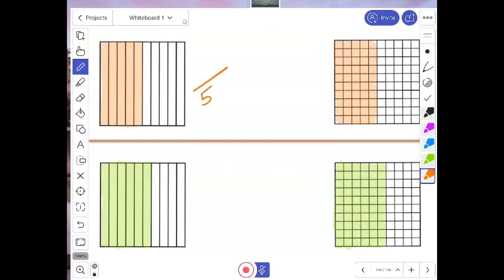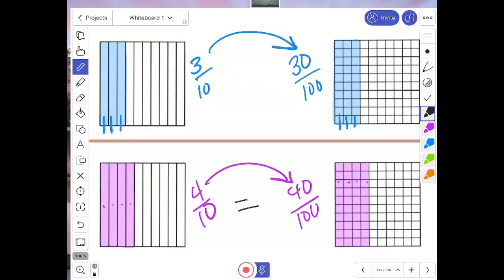Here I have five tenths, and I have fifty hundredths. These are equivalent. They represent the same amount. All of them do so far. They are equivalent.